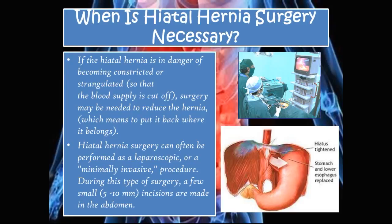If the hiatal hernia is in danger of becoming constricted or strangulated, surgery may be needed to reduce the hernia — meaning to return it to its correct position. Hiatal hernia surgery is often performed as a minimally invasive laparoscopic procedure, using a few small 5–10 mm incisions in the abdomen. The stomach is reduced back into the abdominal cavity, and the hiatus is tightened around the esophagus to prevent recurrence.